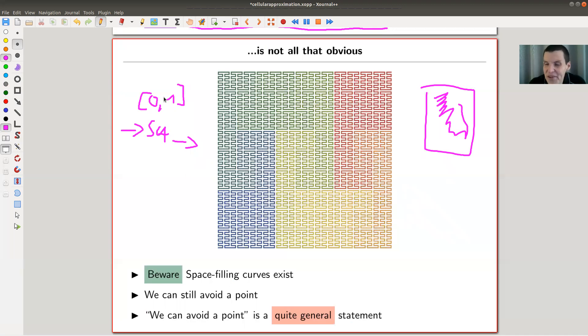So we can't—it's not so obvious why we can do that, right? And it will turn out that we can still do it, as I said, and there's a quite general statement that we can do this in really a lot of generality, which is very surprising.